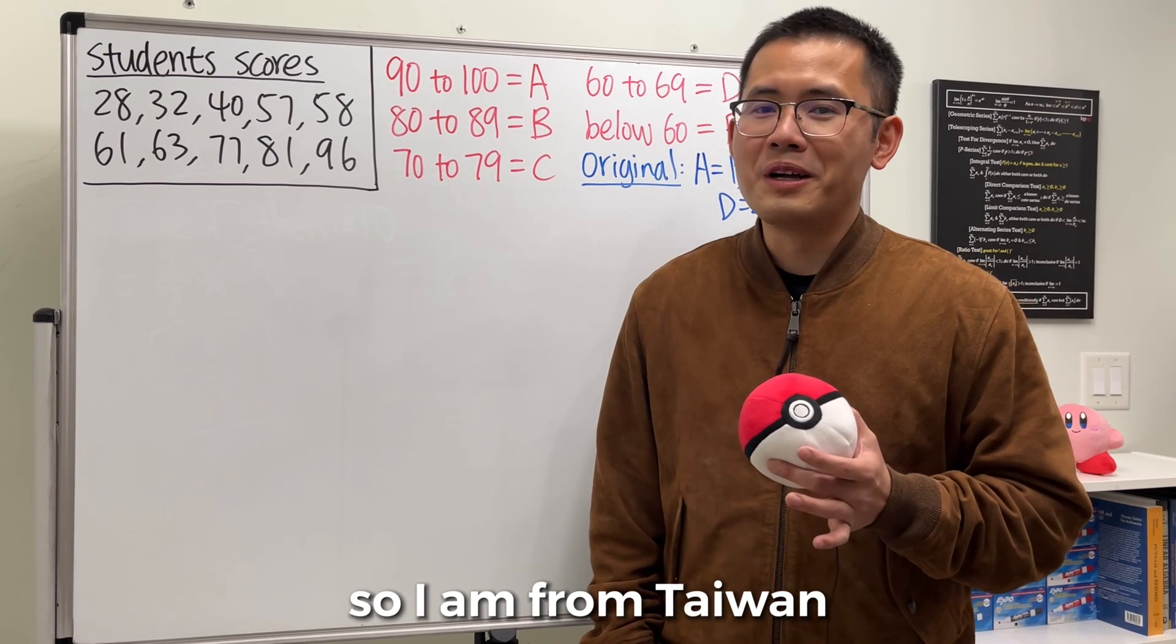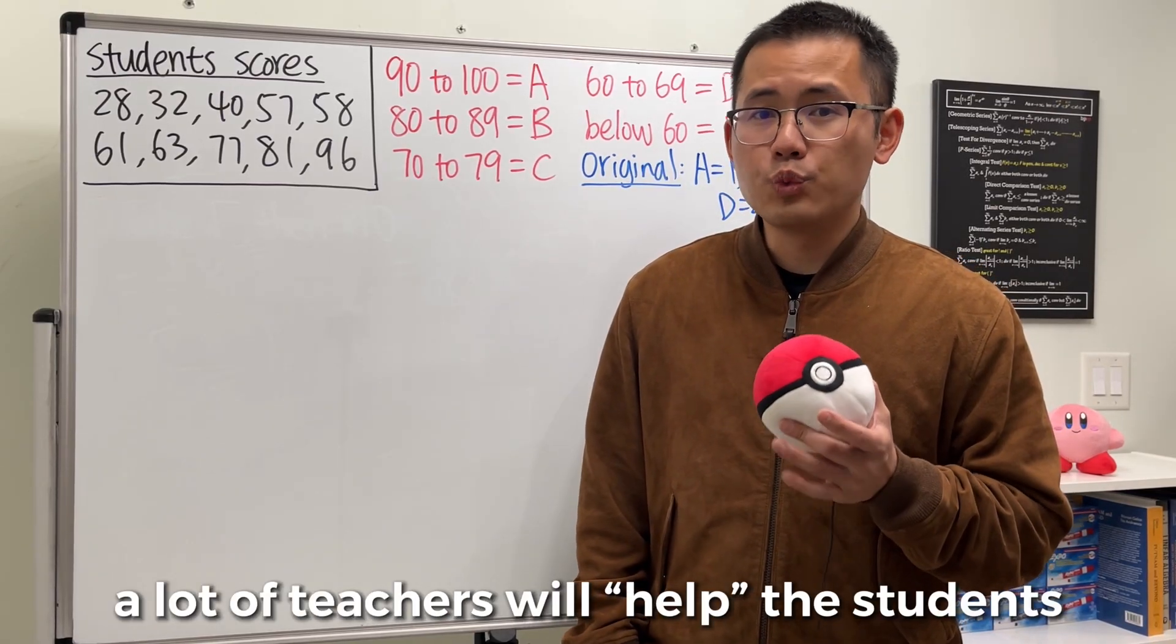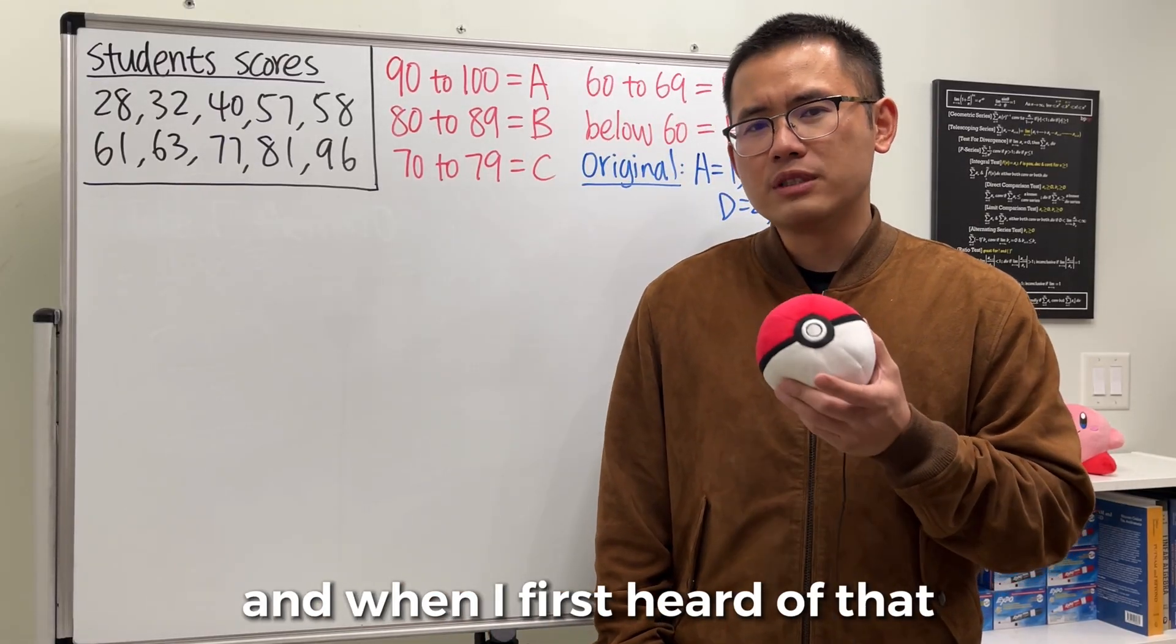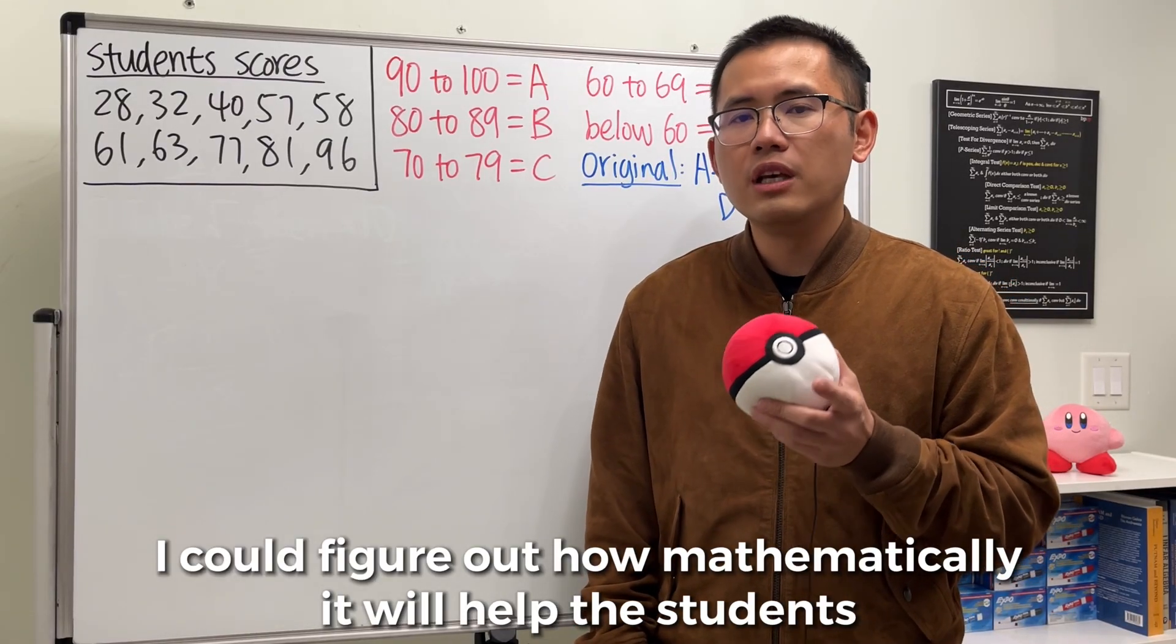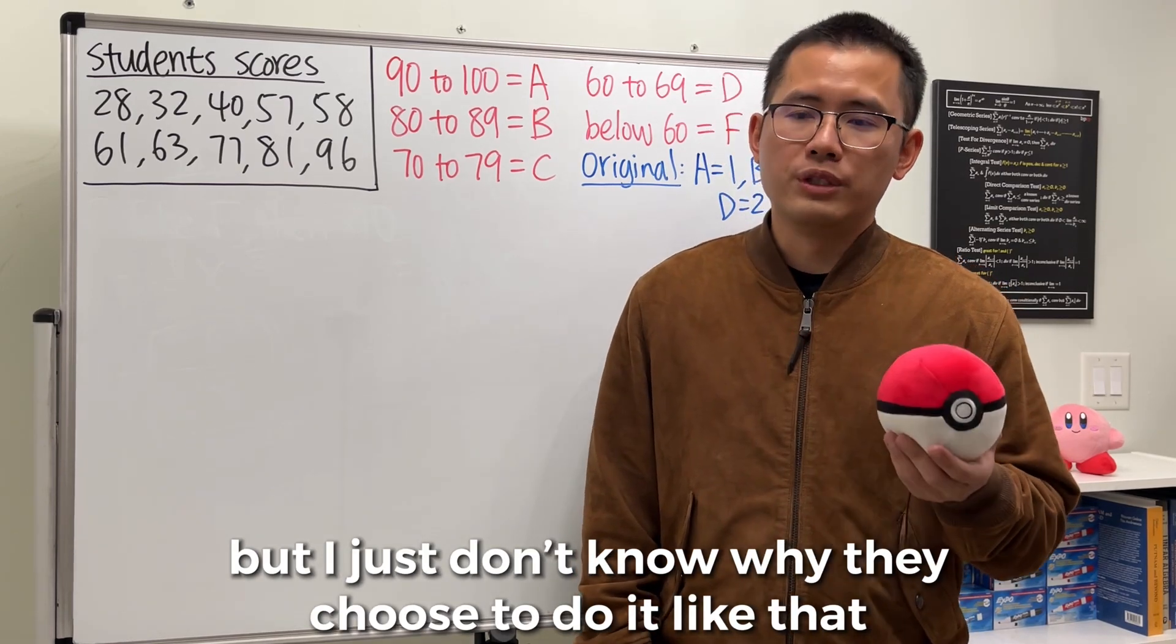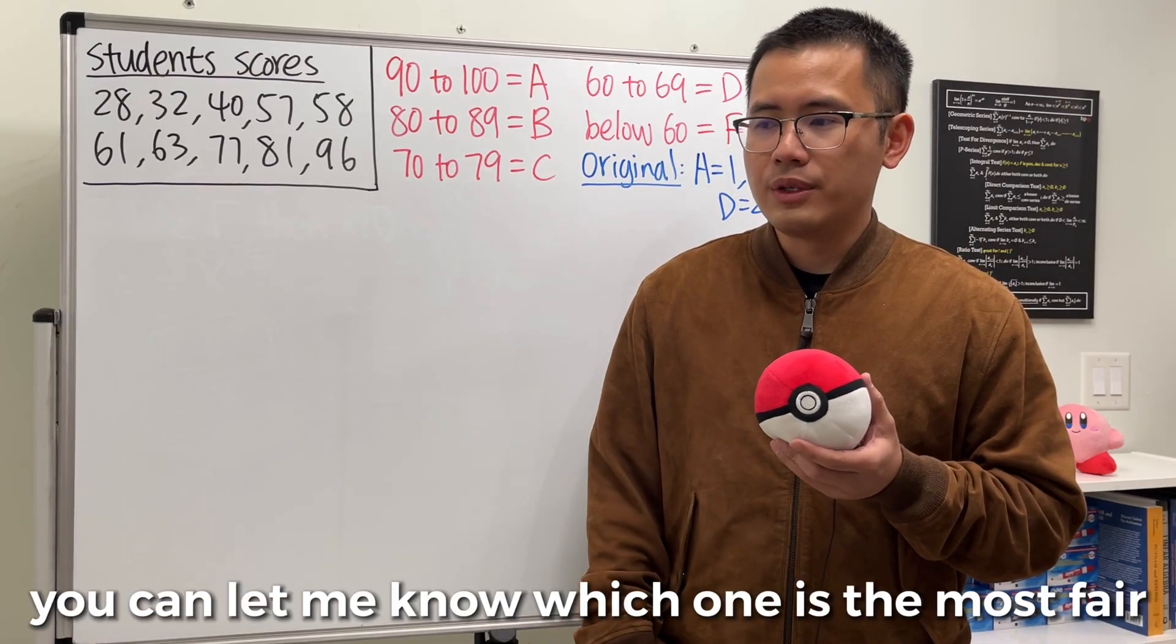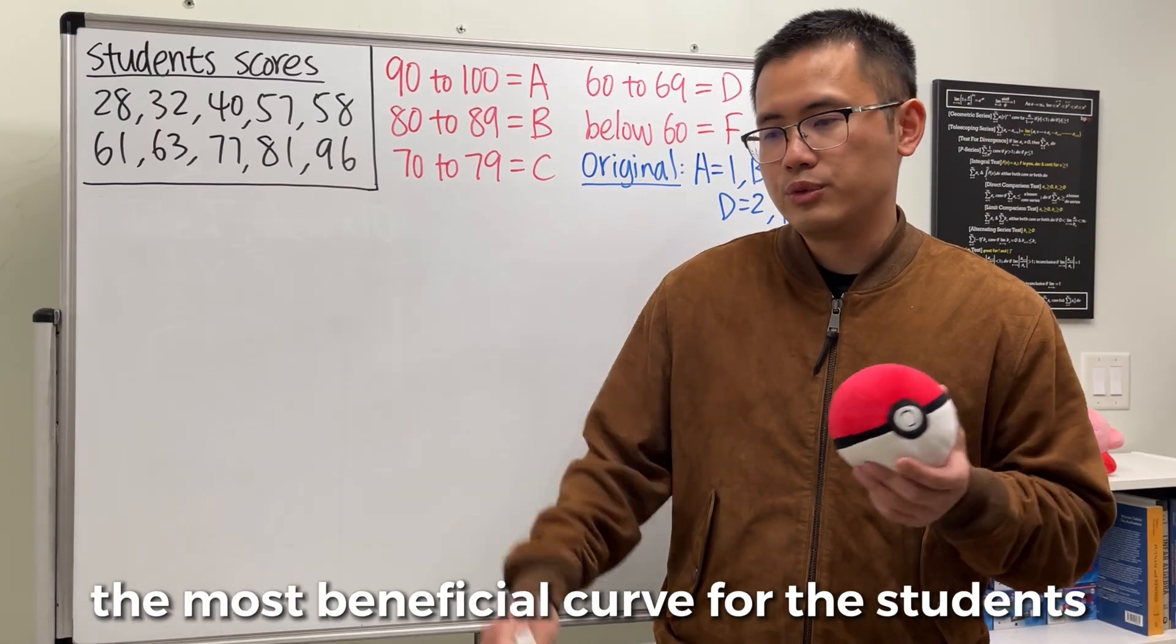So I'm from Taiwan, but I haven't been back for so many years. Apparently in Taiwan, a lot of teachers will help the students by taking the square root of their exam scores and then multiply by 10. When I first heard of that, it got me really interested because I could figure out how mathematically it will help the students, but I just don't know why they choose to do it like that. In this video, I want to demonstrate four different methods, including the one I just mentioned, and you guys can let me know which one you think is the most fair.